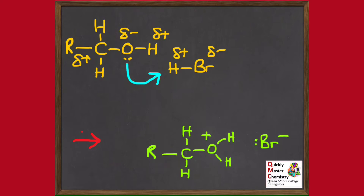That arrow has to start somewhere where there is a pair of electrons to supply. There are really two possibilities: it could start on an existing bond — a covalent bond is a pair of electrons, so we can take a pair from an existing bond and move it to form a new bond, which would break the original bond — or we can start the arrow on a lone pair of electrons on an atom. So to recap: to form a bond, you'll have an arrow starting either on an existing bond or on a lone pair, heading into the space between the two atoms the new bond will join.